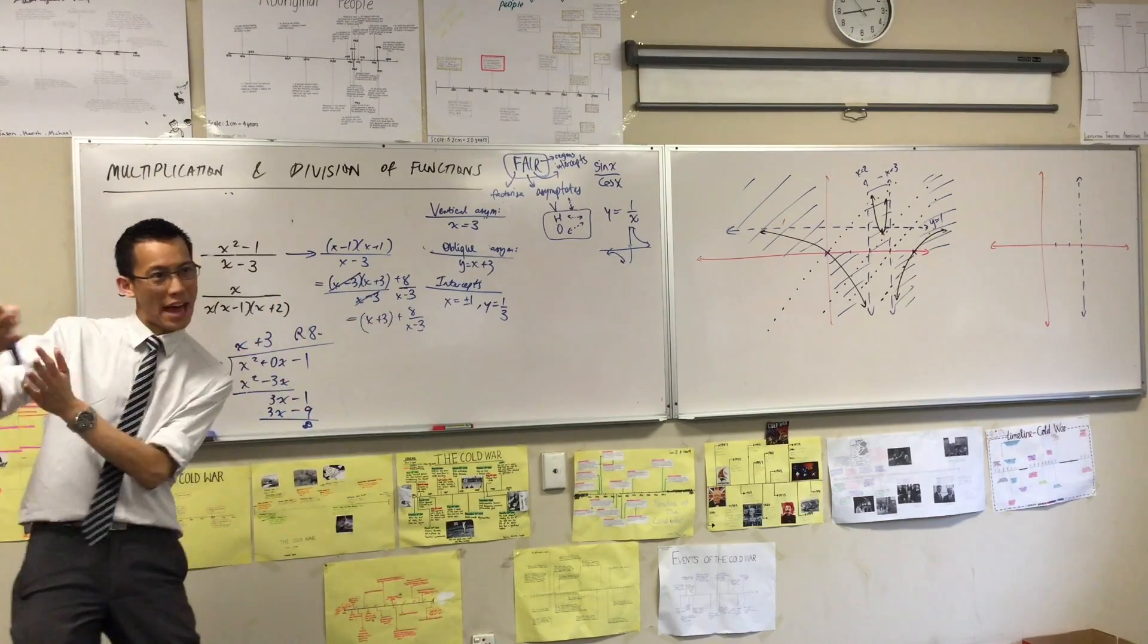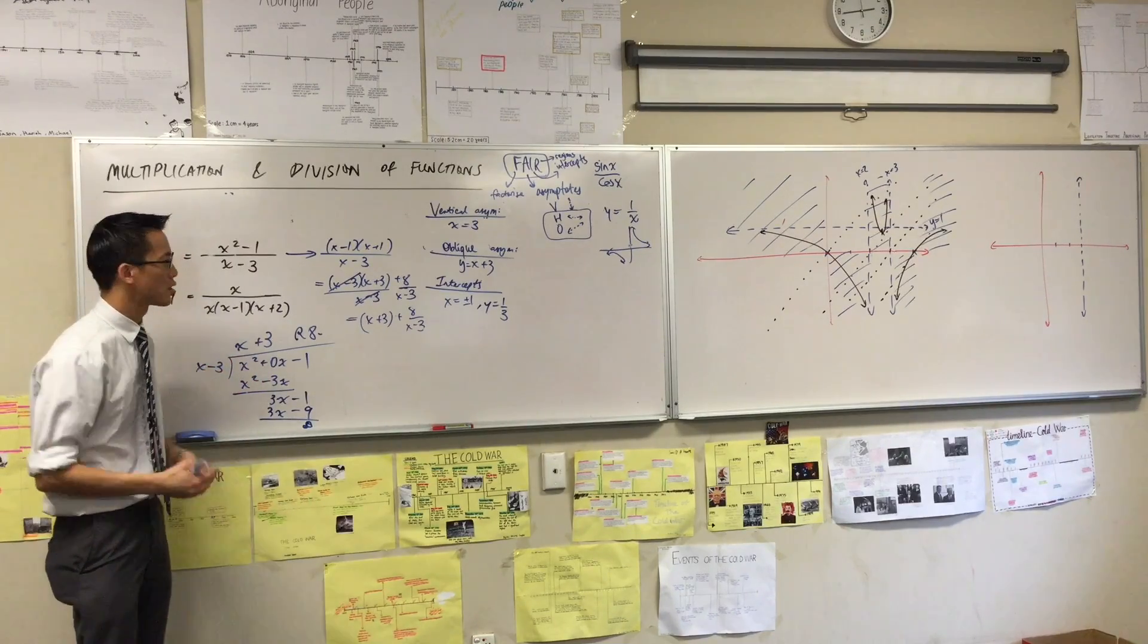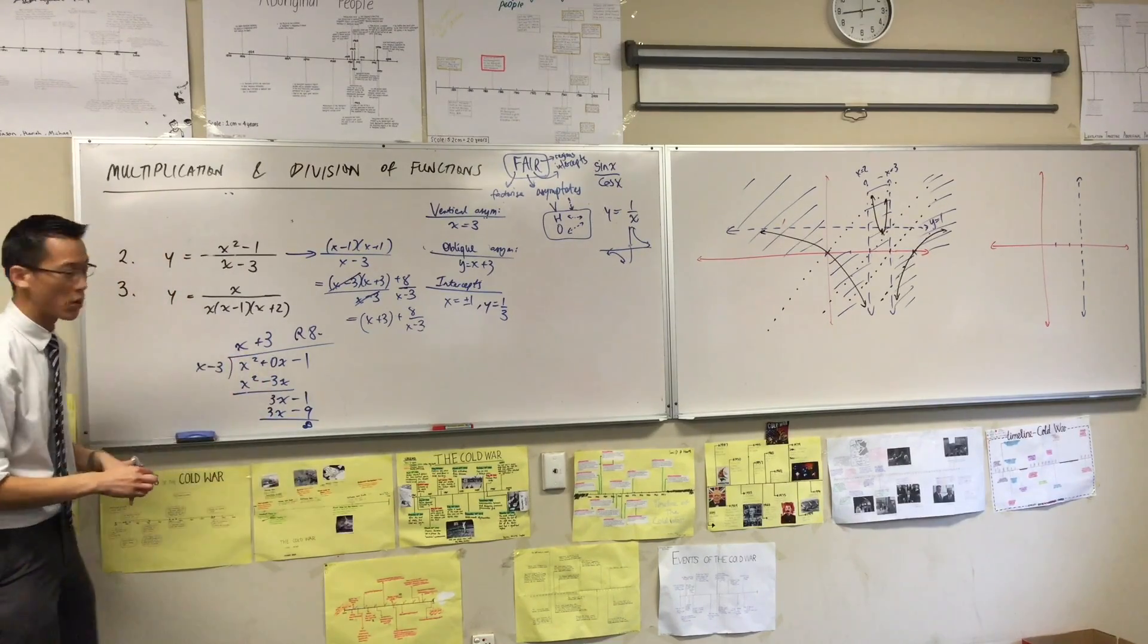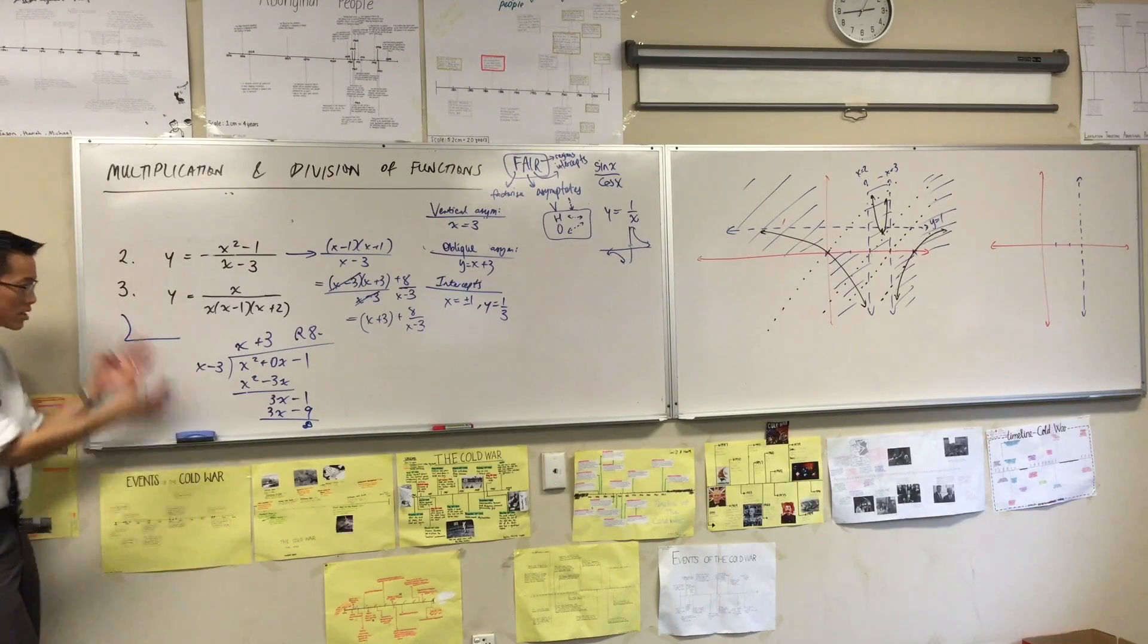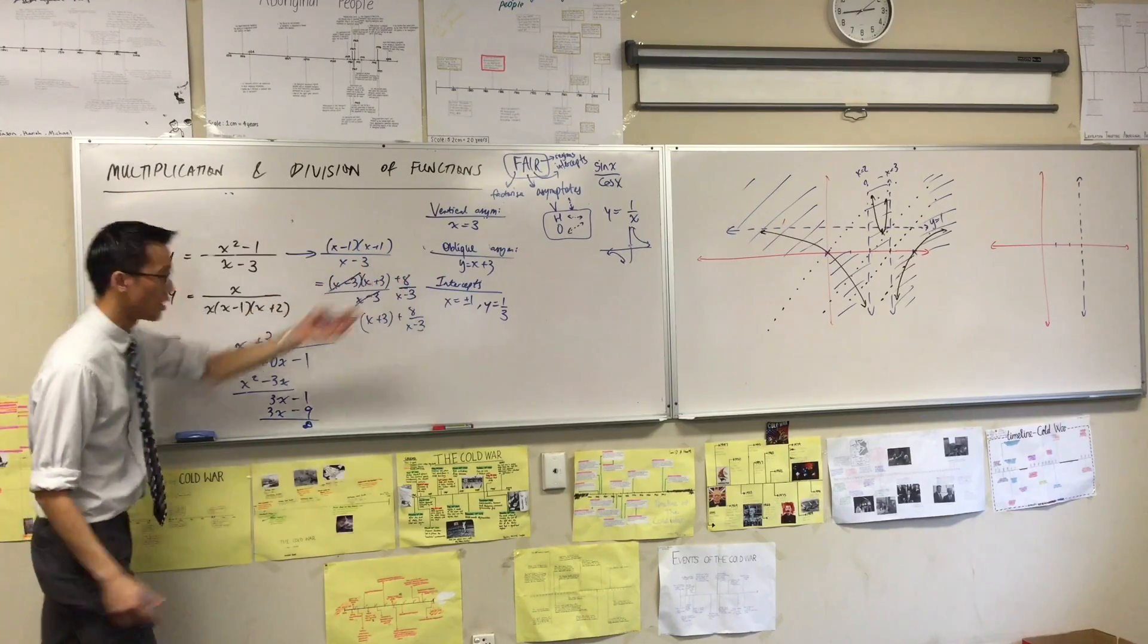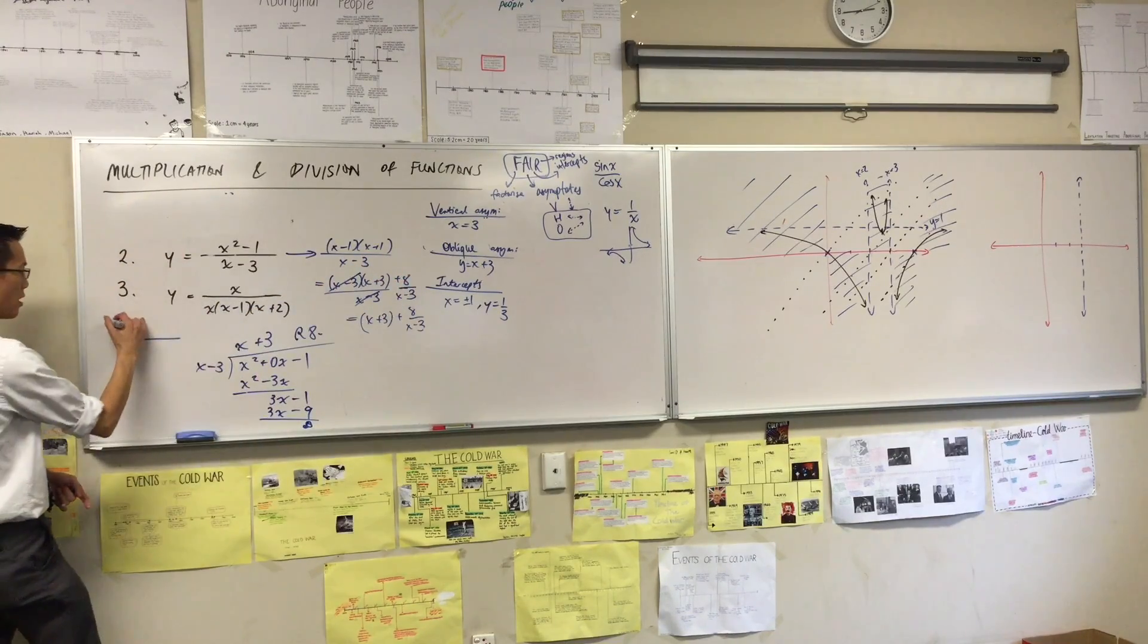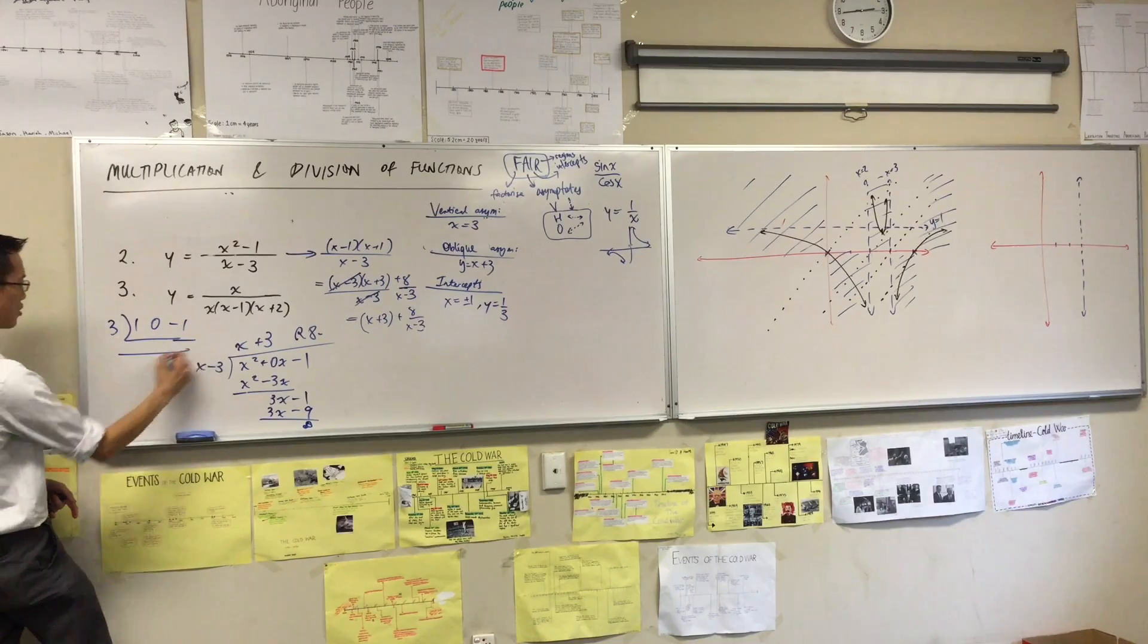And admittedly polynomial division is long, but it works. Whereas any other technique to find what the oblique asymptote may be, they only work this time or that time or when the degrees are certain ways. Even though it's long, this is the reason why I'm quite happy to advocate using synthetic division.